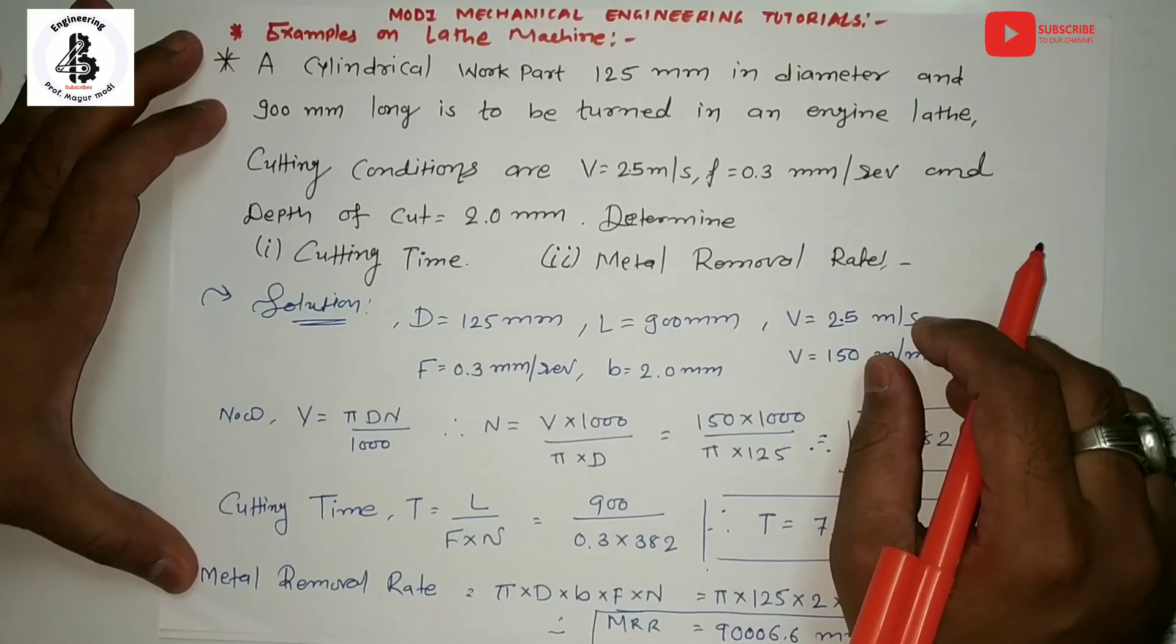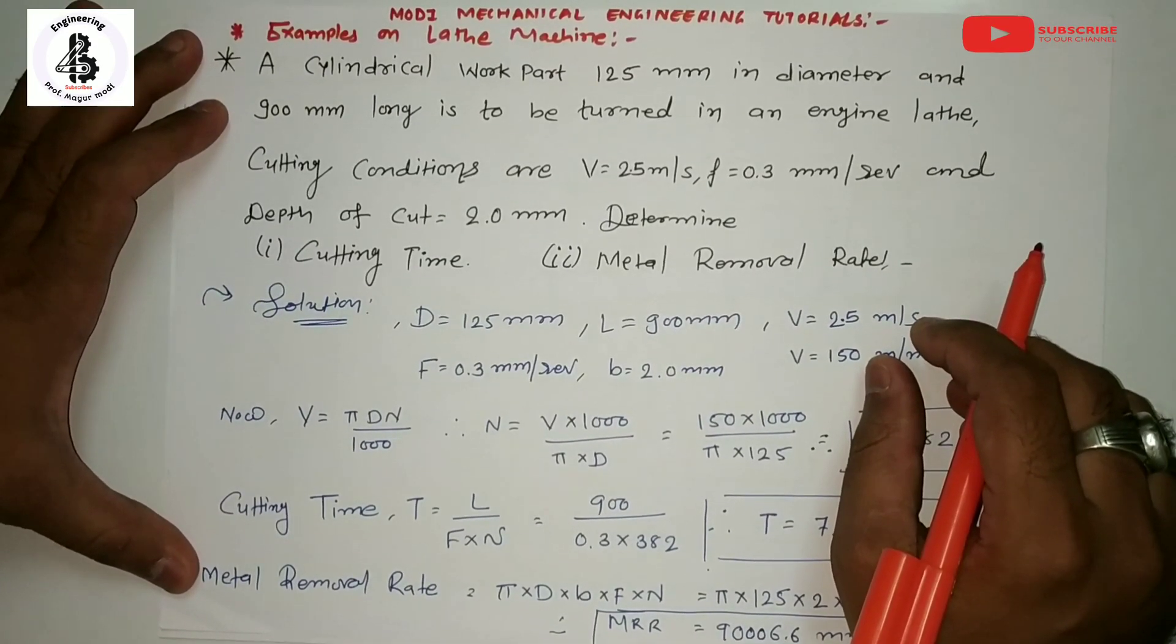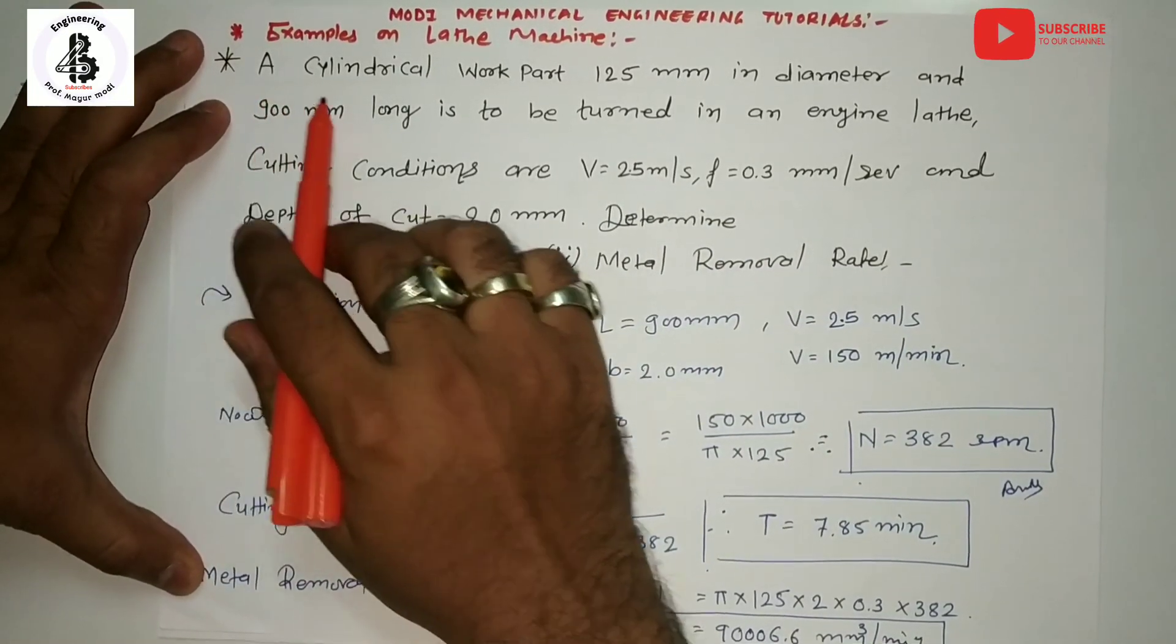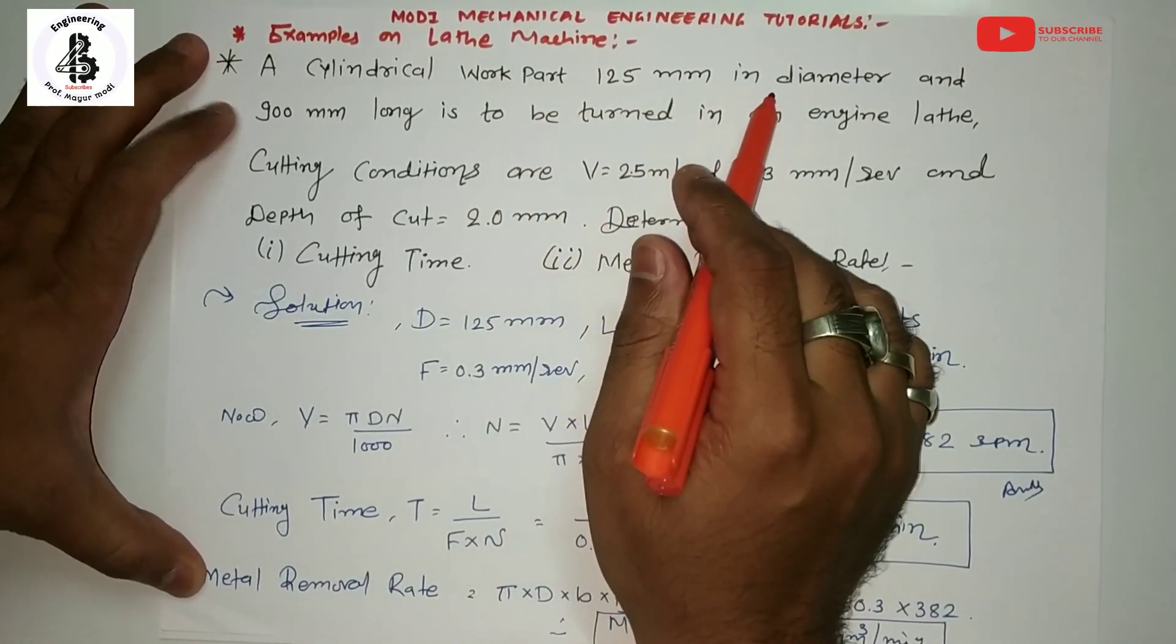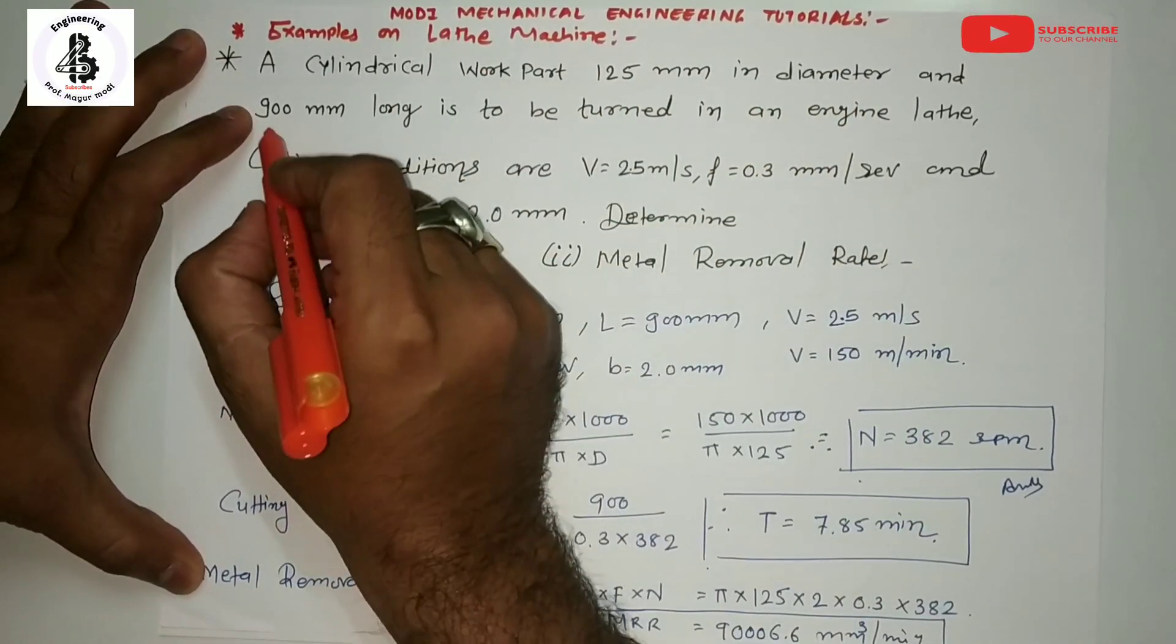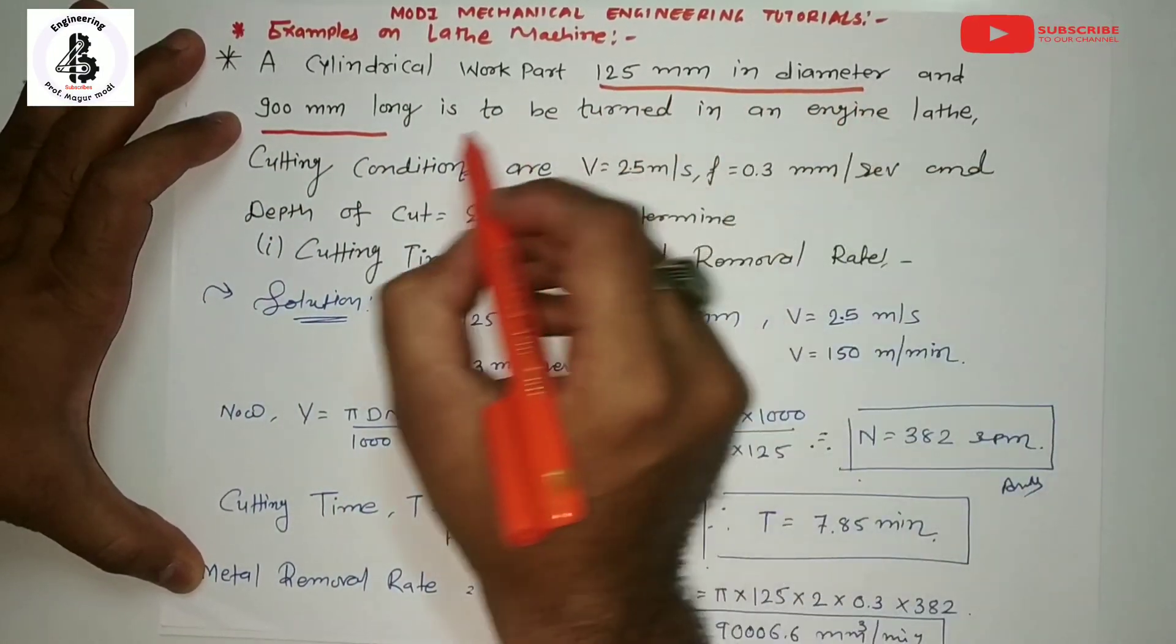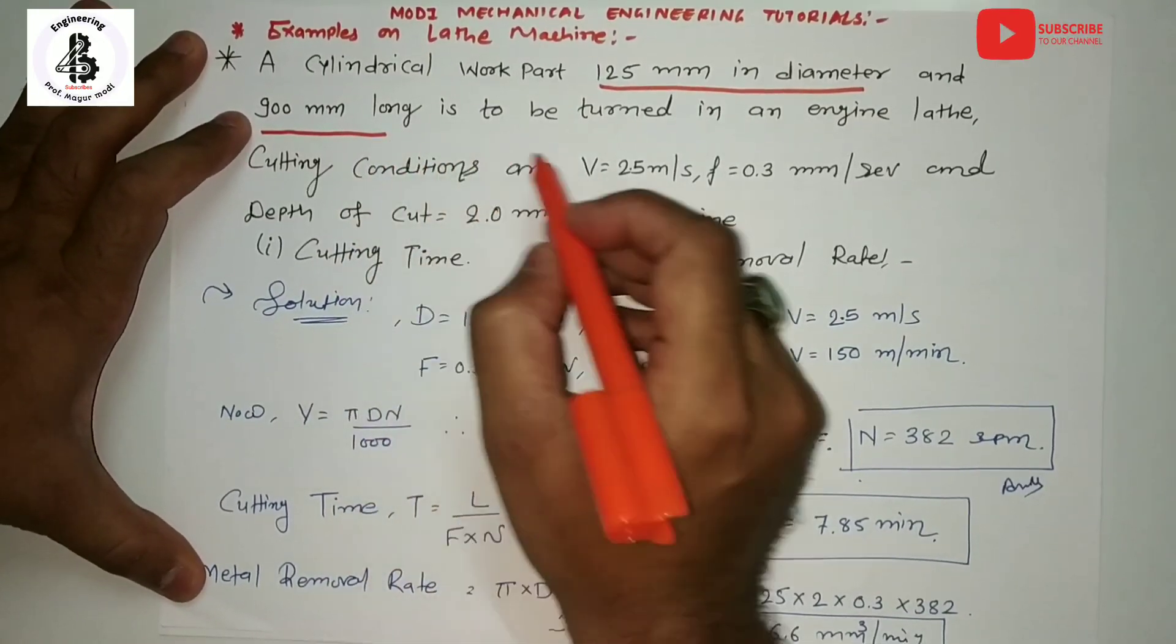So basically how to find the cutting time and the metal removal rate for lathe machines. Let us start with the data. A cylindrical workpart of 125 mm diameter and 900 mm long is to be turned in an engine lathe.